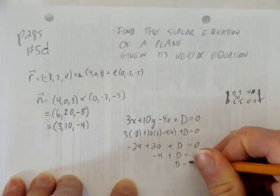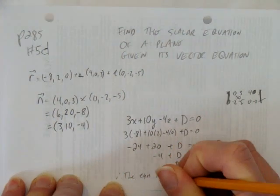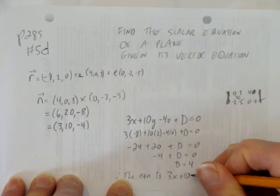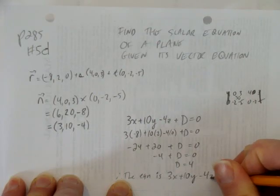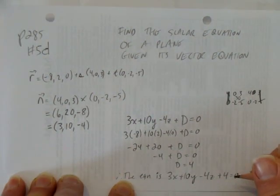In other words, d equals 4. And therefore, the equation is 3x plus 10y minus 4z plus 4 equals 0.